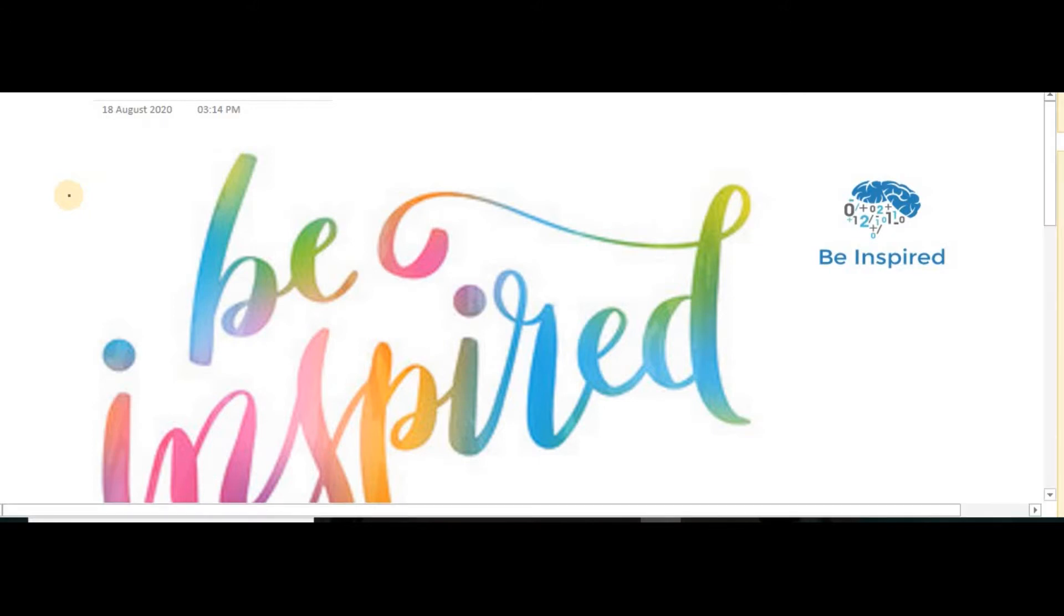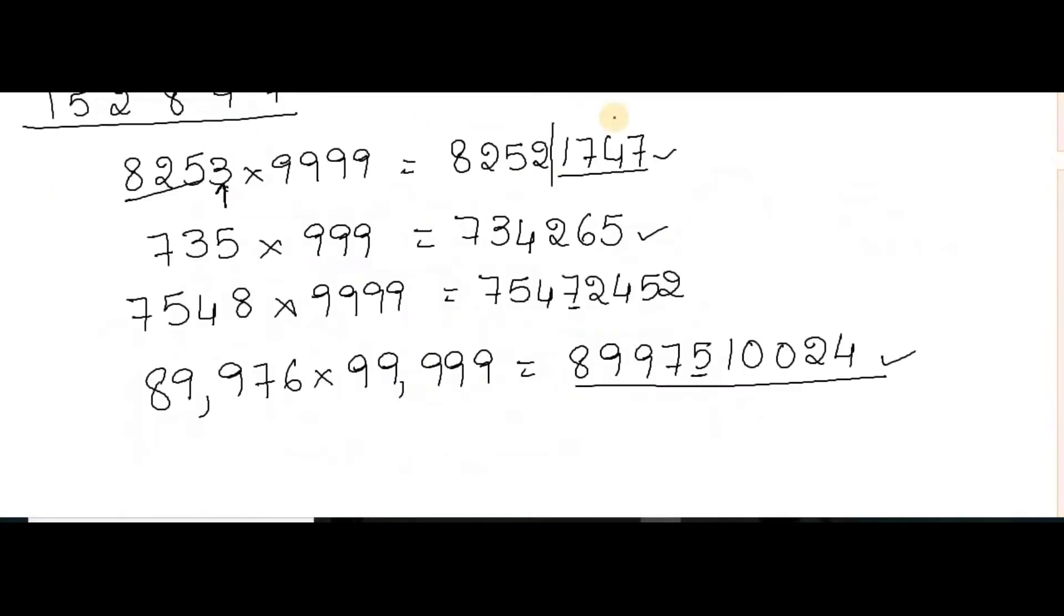We learned how to multiply 9 and 99, that is just by subtracting 10 minus 1 and 100 minus 1, like that. Now in today's class we are going to learn that if you have a different number of digits, then what you should do and how you can multiply. That trick we will learn today.